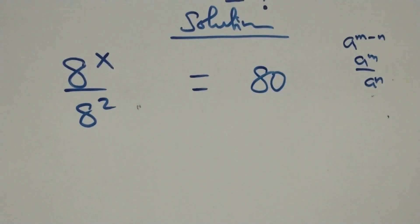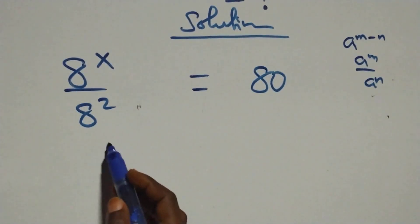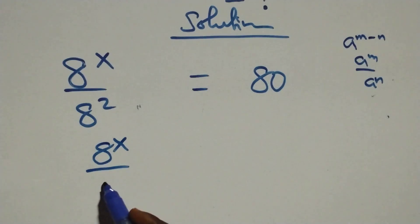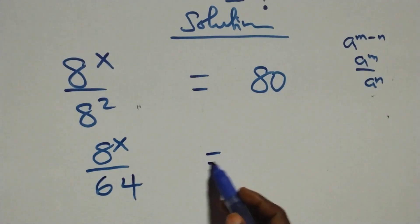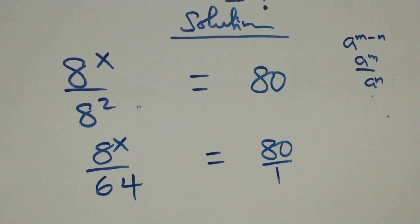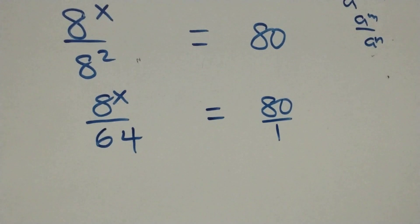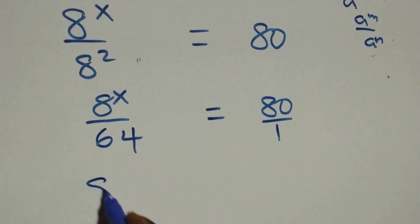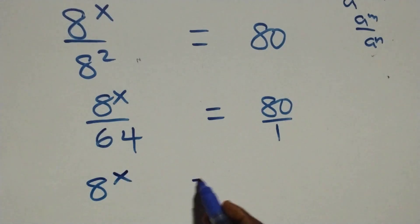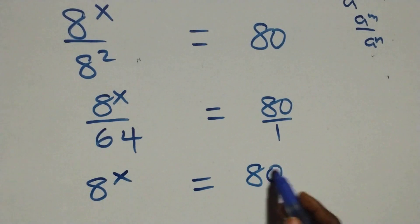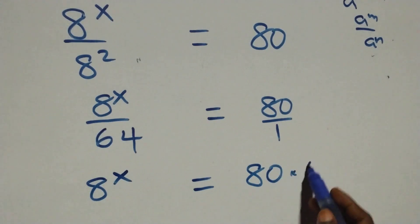This is the same thing as a raised to power x over a squared. 8 times 8 is 64, so this becomes 8 raised to power x over 64 equals 80 over 1. We cross-multiply: 8 raised to power x times 1 equals 80 times 64.